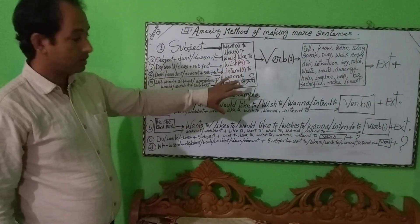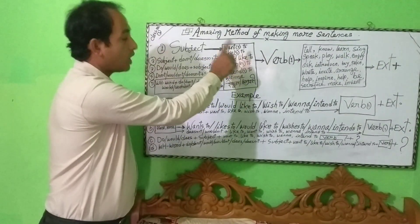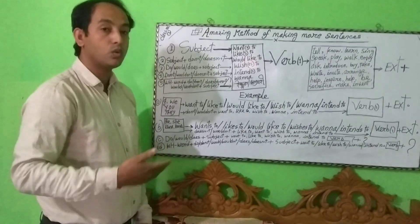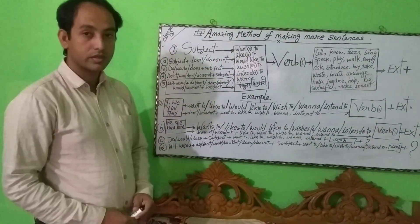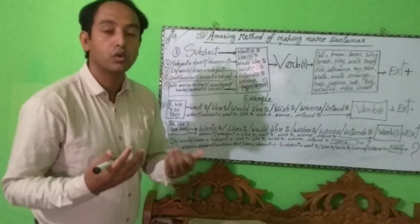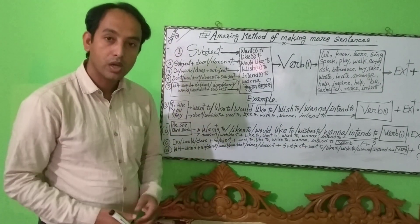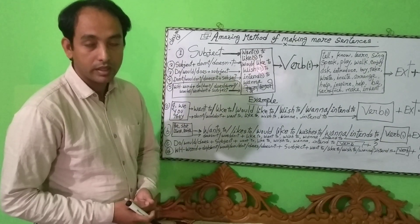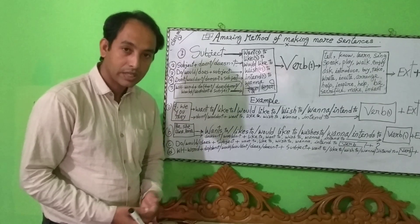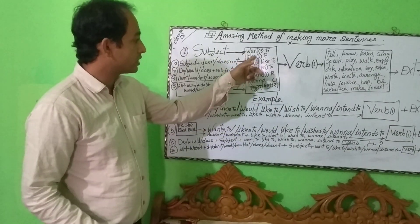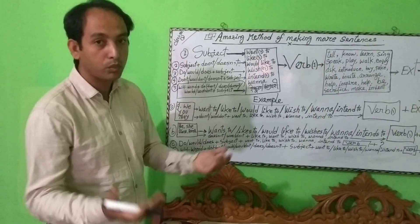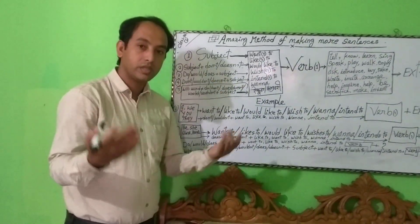There are several words in the box: 'want to,' 'wants to,' 'like to,' 'would like to,' 'wish to,' 'intend to,' 'wanna.' All these words have the same meaning. Whenever we want to do anything, feel interest in anything, or need to do anything, for such kinds of sentences we can use any word from the box. All these have the same meaning, and we can make more sentences using them.